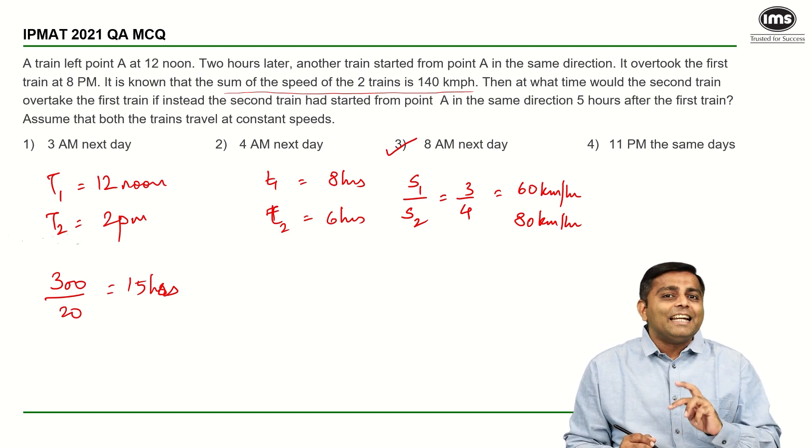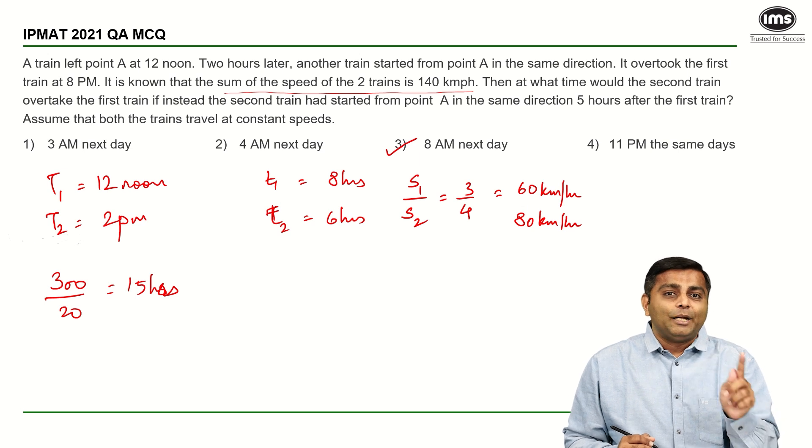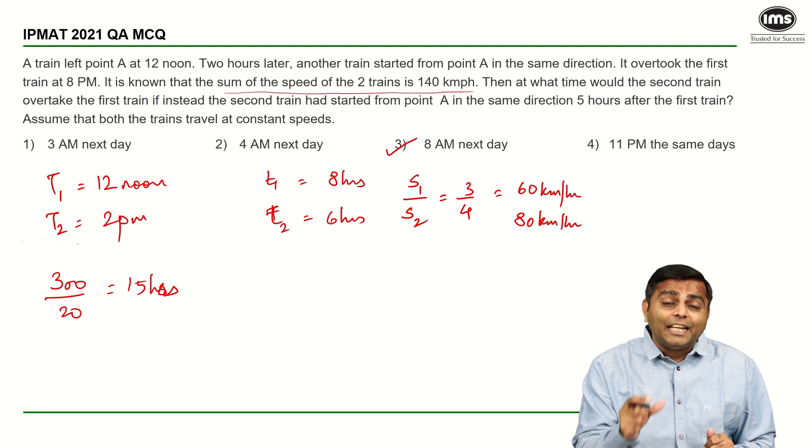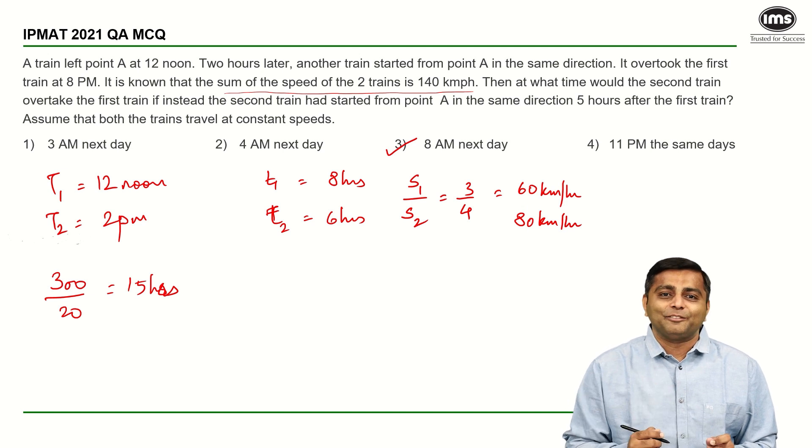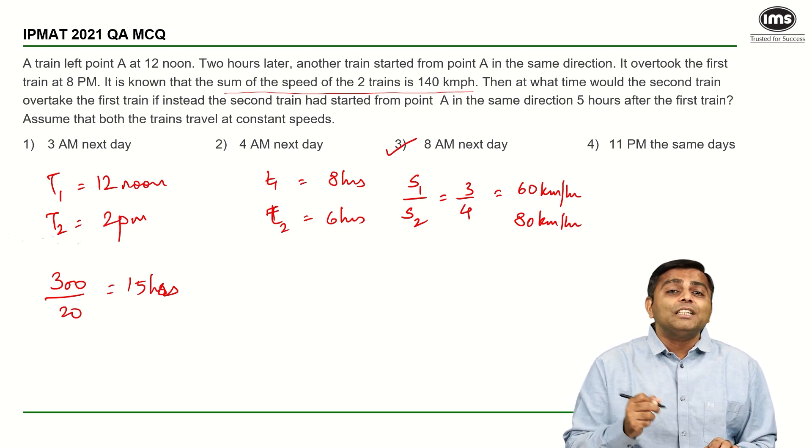In this case, in the second case, the starting difference was 5 hours. First train started at 12 noon, second at 5 pm and the time that they are taking to meet each other is 15. That is the pattern that we can observe.